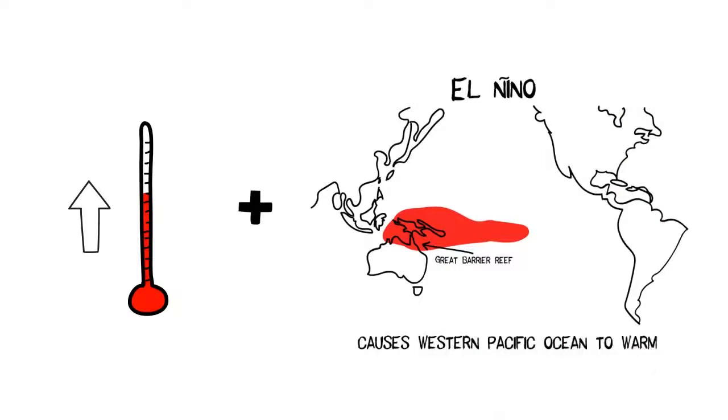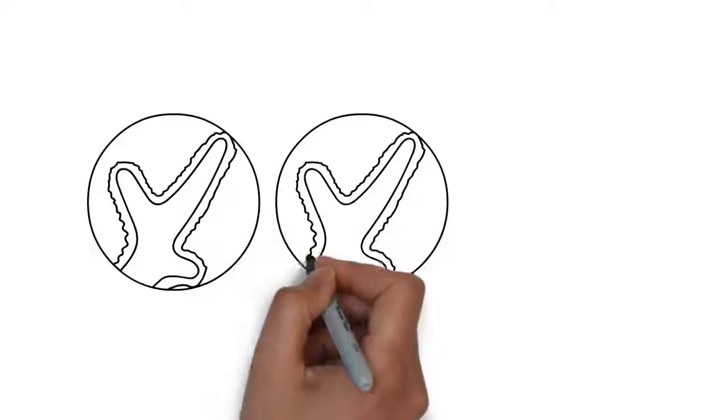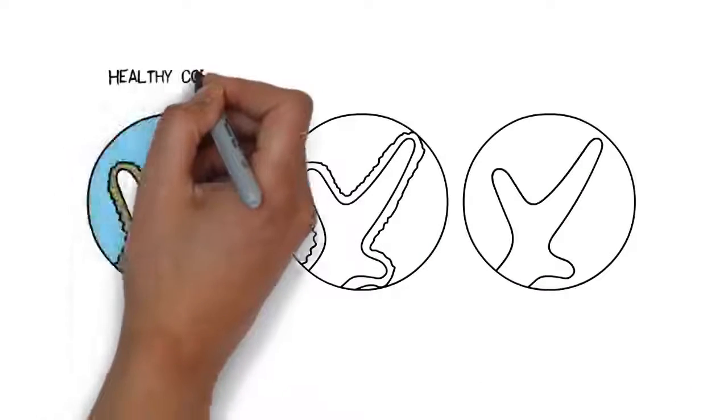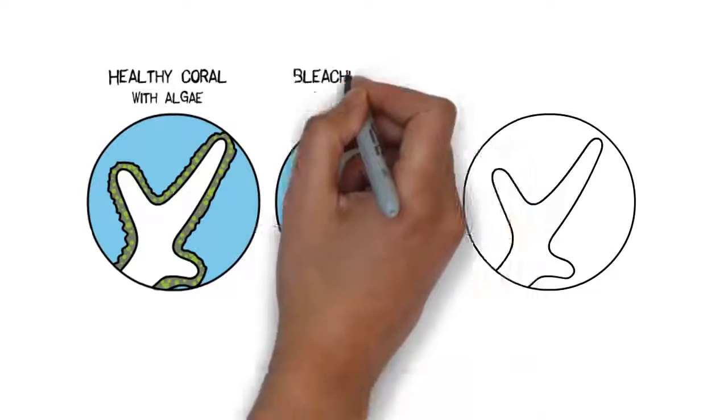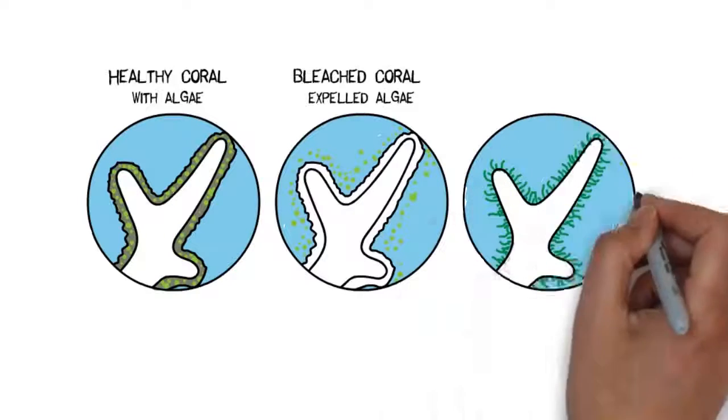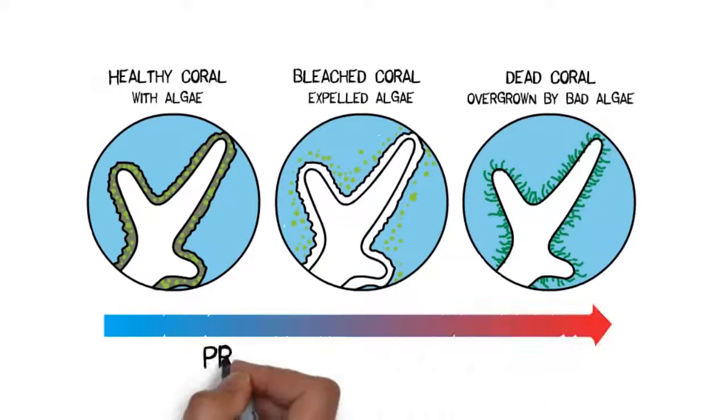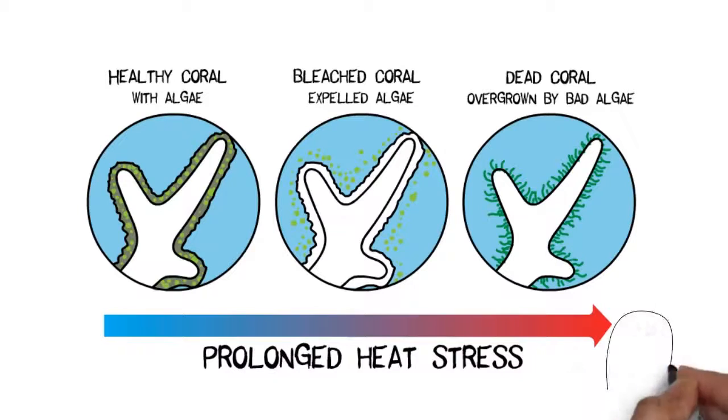If it stays too hot for too long, corals get some sort of a heat stroke and expel the algae they rely on for food and bleach. If it doesn't get any cooler quickly, corals literally starve to death. Frank survived the first two mass coral bleaching events, where many other corals did not. And overall the Great Barrier Reef was able to bounce back.